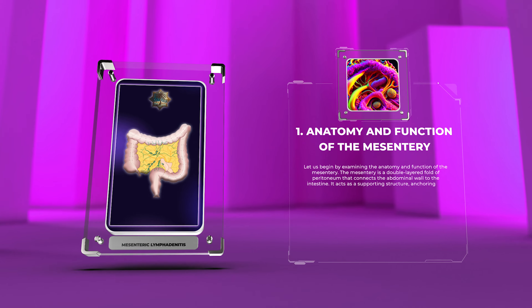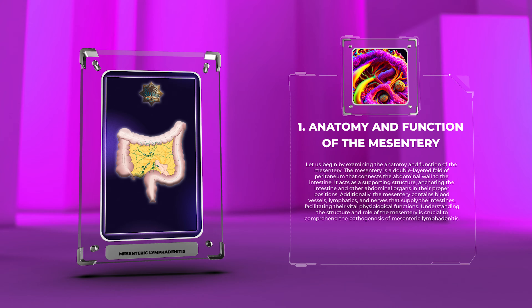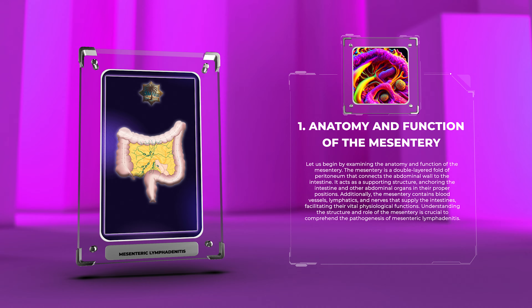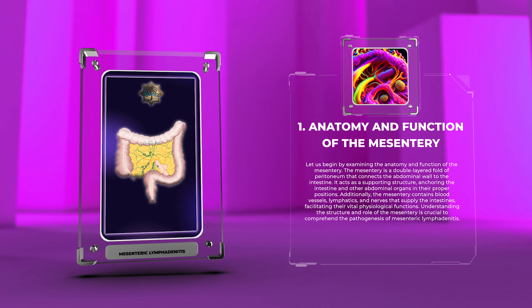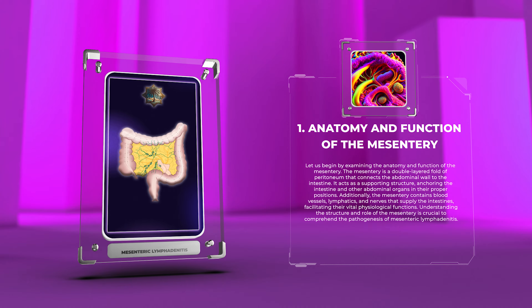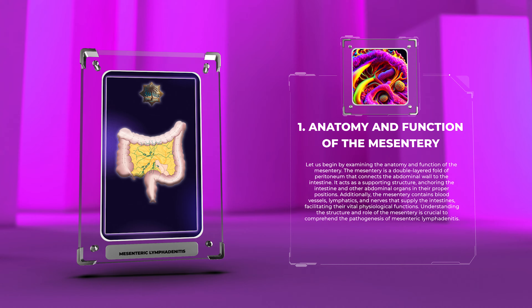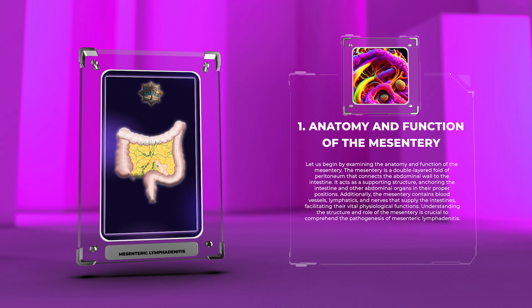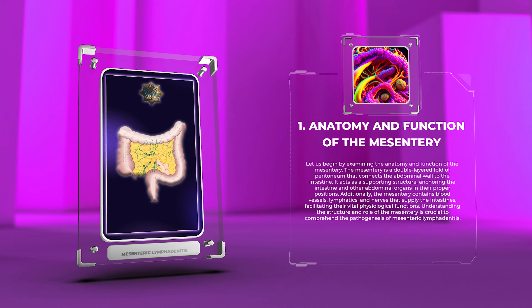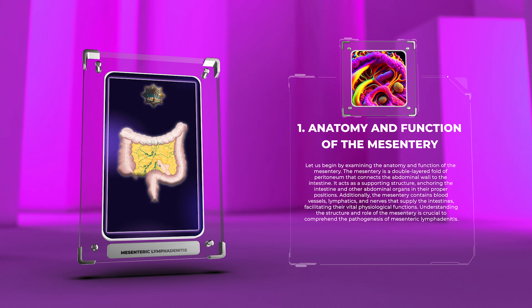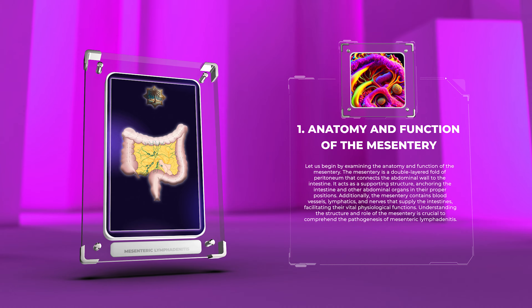The mesentery is a double-layered fold of peritoneum that connects the abdominal wall to the intestine. It acts as a supporting structure, anchoring the intestine and other abdominal organs in their proper positions. Additionally, the mesentery contains blood vessels, lymphatics, and nerves that supply the intestines, facilitating their vital physiological functions. Understanding the structure and role of the mesentery is crucial to comprehend the pathogenesis of mesenteric lymphadenitis.